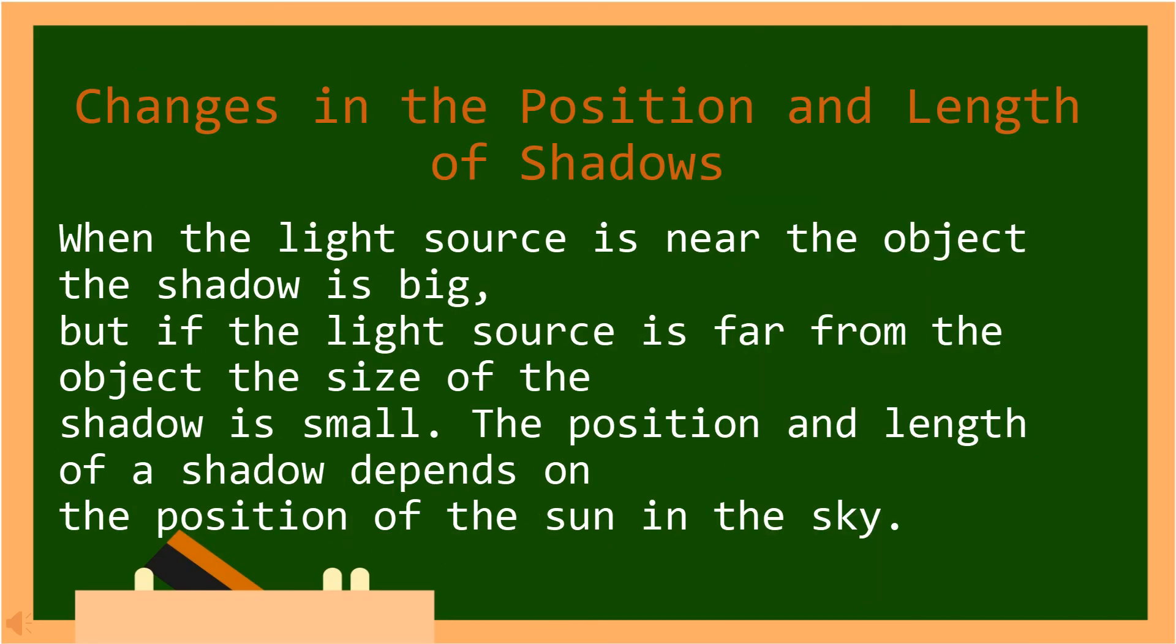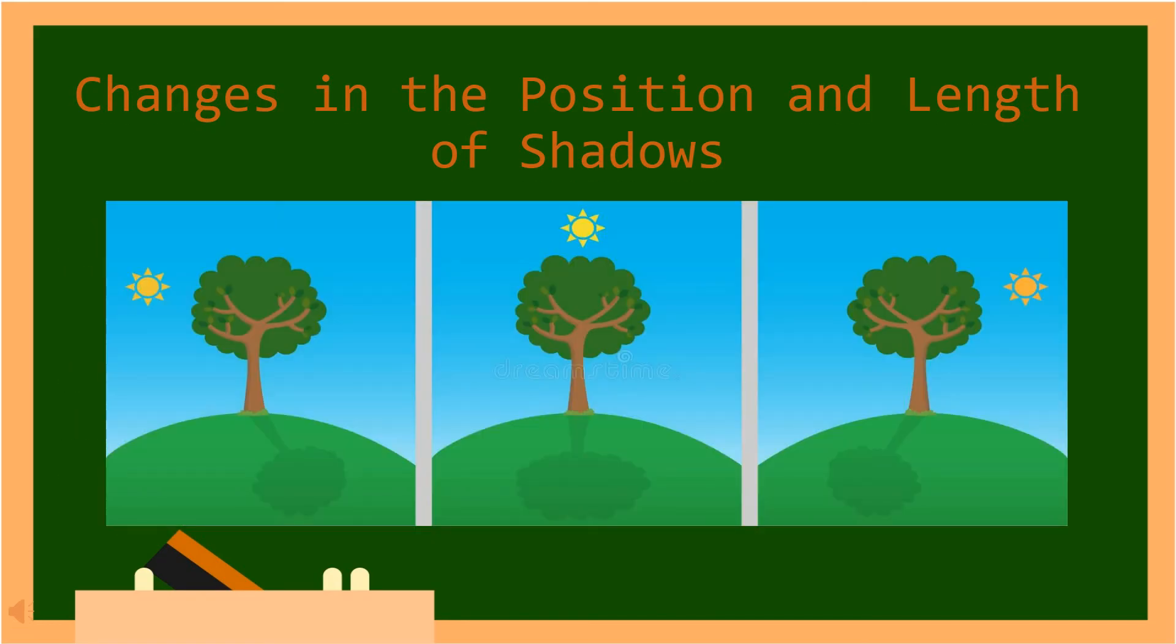When the light source is near the object, the shadow is big. But if the light source is far from the object, the size of the shadow is small. The position and length of a shadow depends on the position of the sun in the sky. In Tagalog, kapag ang pinagmulan ng ilaw ay malapit sa bagay, malaki ang anino. Ngunit kung ang mapagkukunan ng ilaw ay malayo sa bagay, ang anino ay maliit. Ang posisyon at haba ng isang anino ay nakasalalay sa posisyon ng araw sa kalangitan.